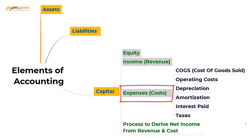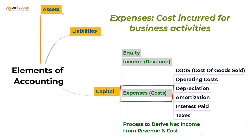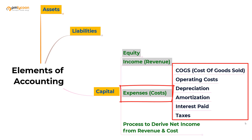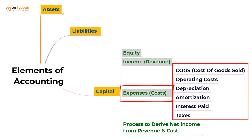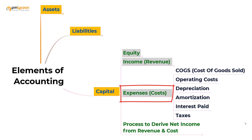Now let us look at expenses. Expenses are also referred to as costs — the cost incurred for something that you need to pay. There are several different types of expenses for a business. Please pay attention here because it's really important to understand the different expense types in order to compute profits. If you do not understand the different expense types, you will not be able to compute the profits.